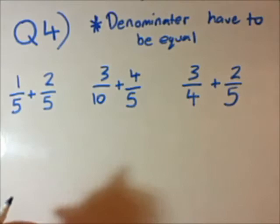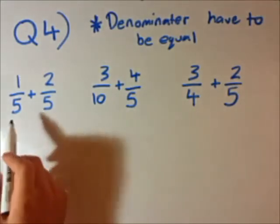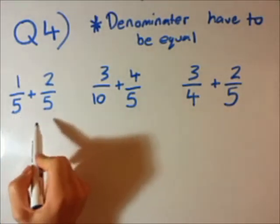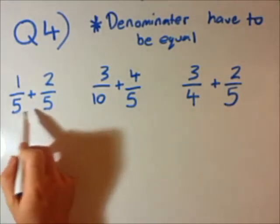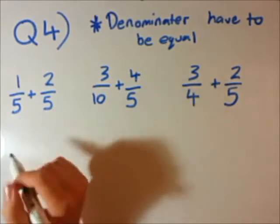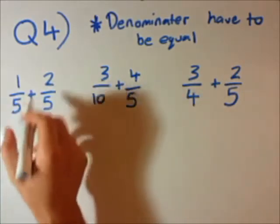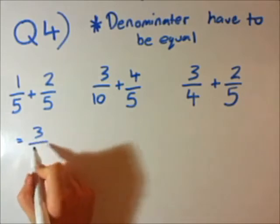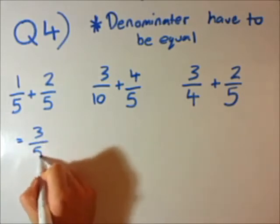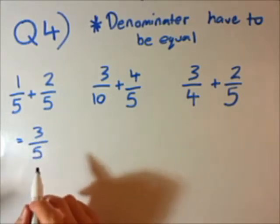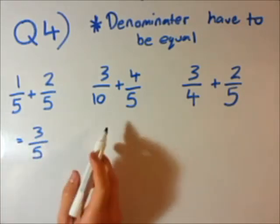Let's do a bit of practice. The first one: 1 over 5 plus 2 over 5. The denominators are the same, so it's simple — you just add the top. 1 plus 2 is 3, which equals 3 over 5. Notice here I didn't add the denominator — that's the big key.